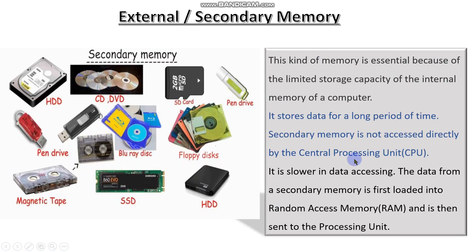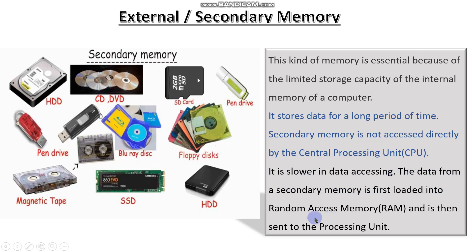Moving on to the next type — external or secondary memory. As you can see, these are all kinds of secondary memories. This kind of memory is essential because of the limited storage capacity of a computer's internal memory. It stores data for a long period of time. Secondary memory is not accessed directly by the CPU — it is lower in data access speed. Data from secondary memory is first loaded into RAM and then sent to the processing unit.